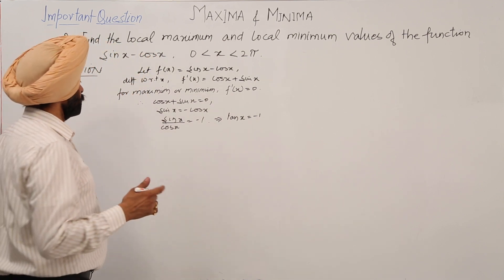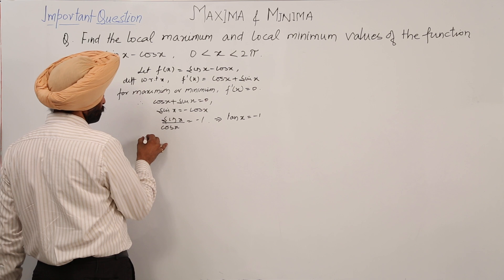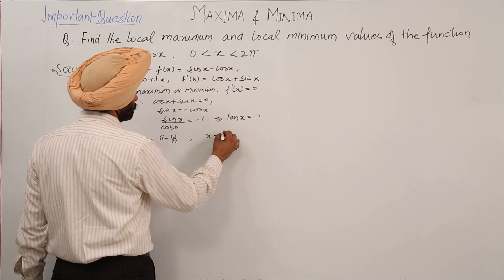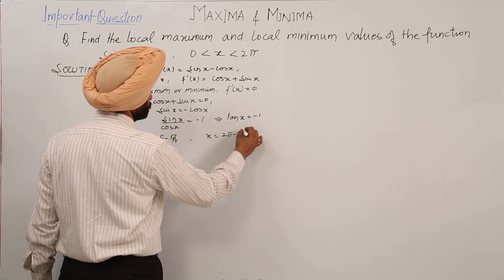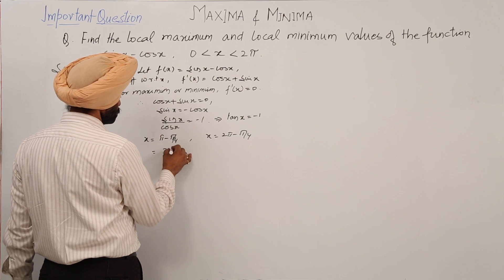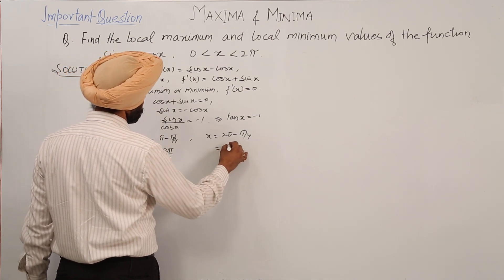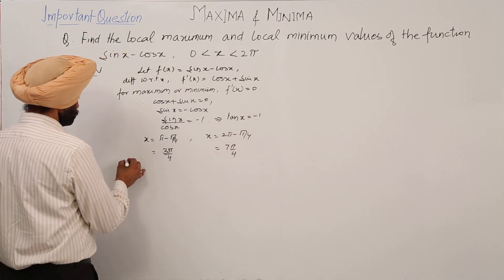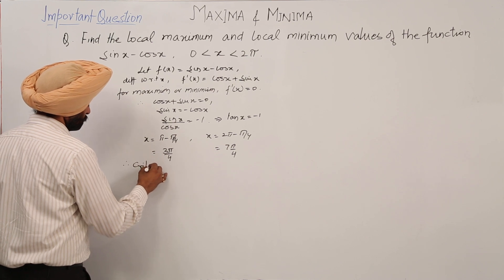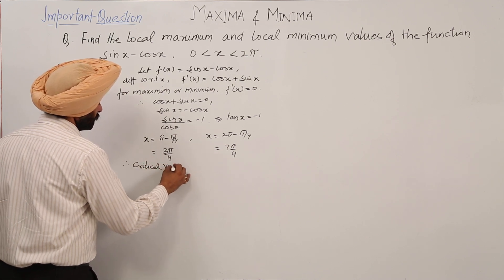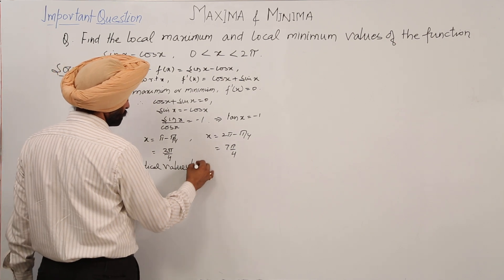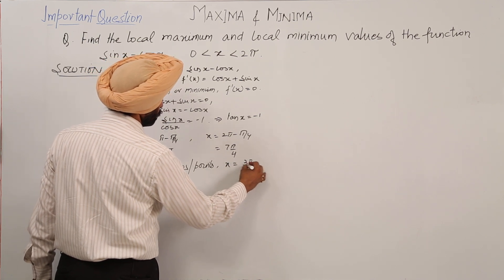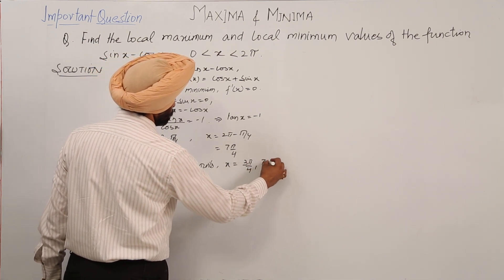When tan x is minus 1, x is equal to π minus π/4, and x is equal to 2π minus π/4. This gives x = 3π/4 and x = 7π/4. Therefore, the critical points are x = 3π/4 and x = 7π/4.